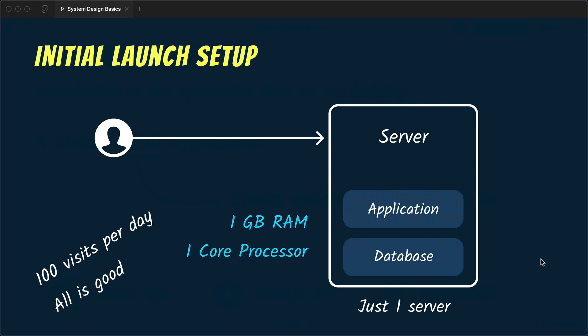Our initial setup can look like this. Let's say that we took a droplet on DigitalOcean or Linode, so we have just one server. It's running a Linux operating system and our application and database are running on the same server. Our users interact with the server through the URL and they start creating notes. In the beginning we just have 1 GB of RAM and one core processor, which is enough to support the limited number of users we're getting per day. Everything is working fine.